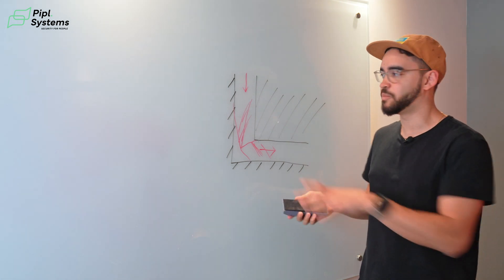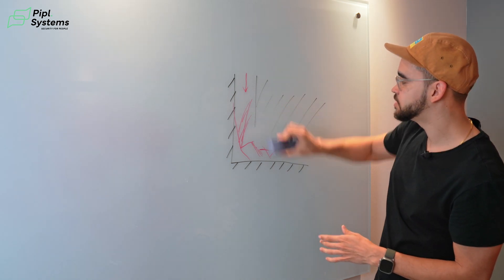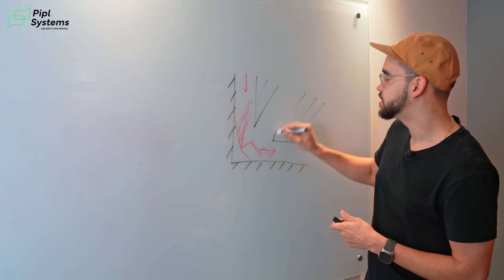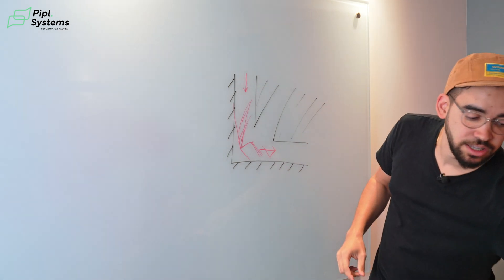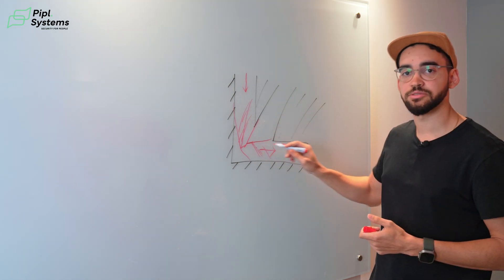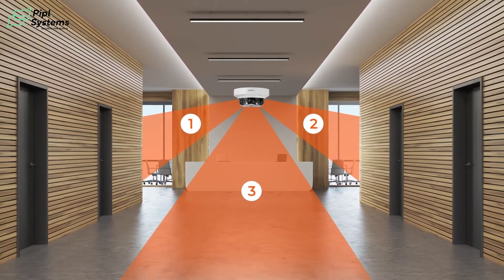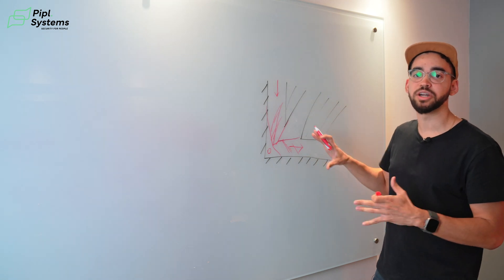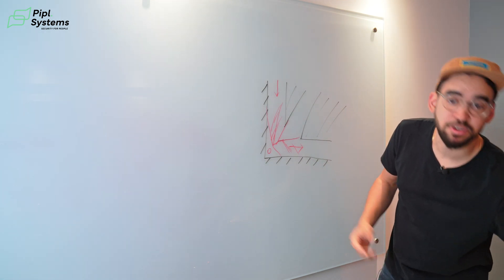Moving to the three-channel camera, a good example is a reception area. If you remove some walls and open the space, there are angles left uncovered. That's where the three-channel comes in — it adds a lens to your camera. One lens covers the right, one covers up, one covers center. For a receptionist against a wall, with the desk in the corner, everything above their head is covered and they can monitor everything in front of them — no blind spot.